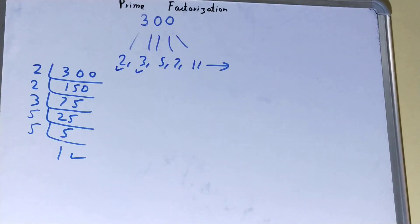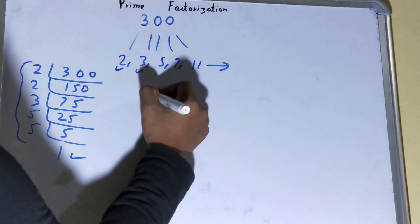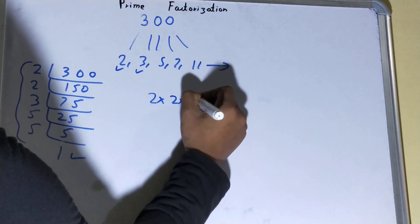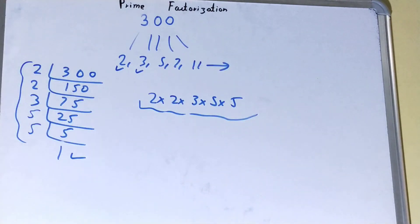Once you get 1, your work is totally done. Whatever you have on the left hand side will be your answer: that is 2×2×3×5×5. That will be the set of prime factors for the number 300.